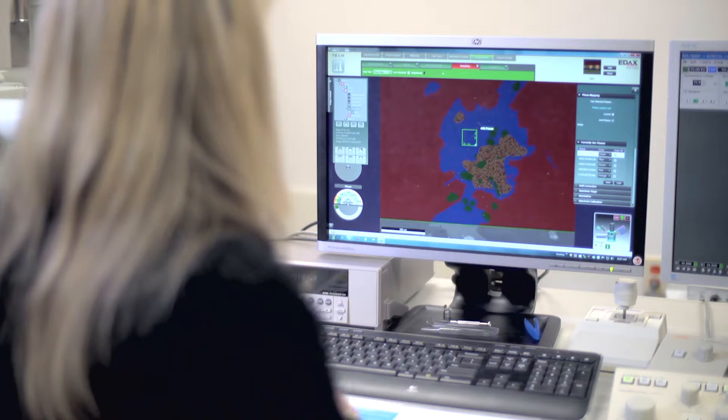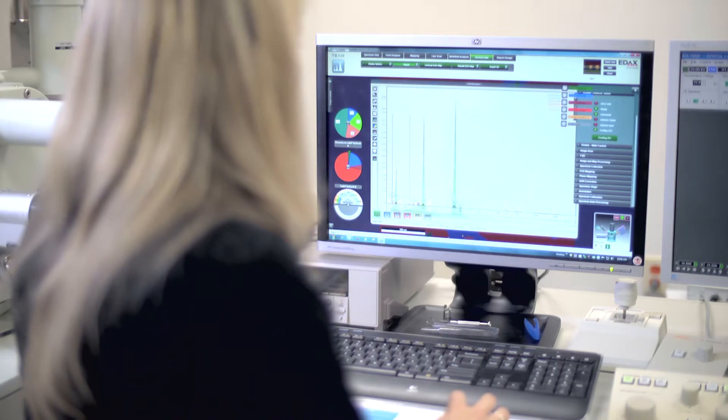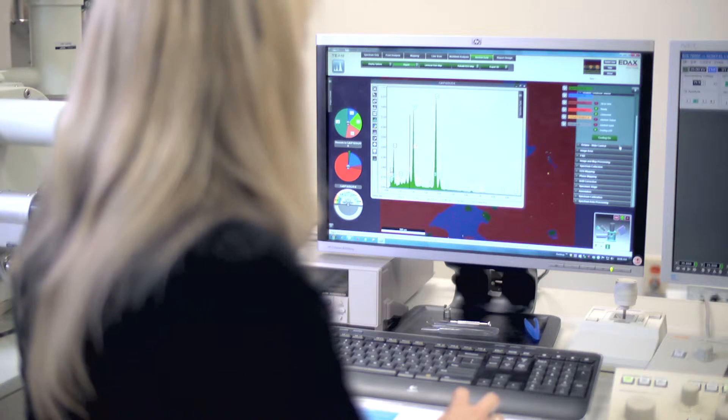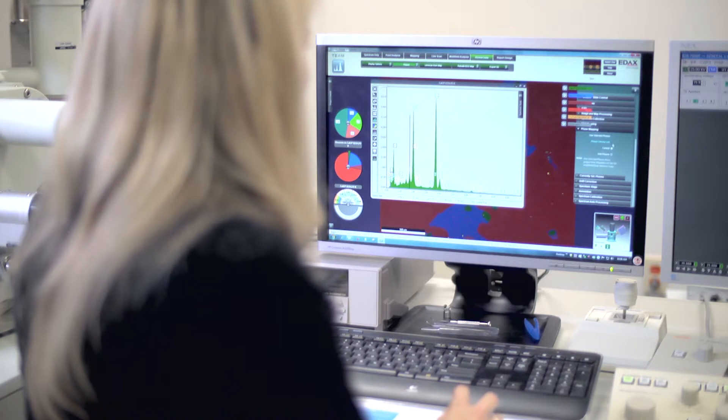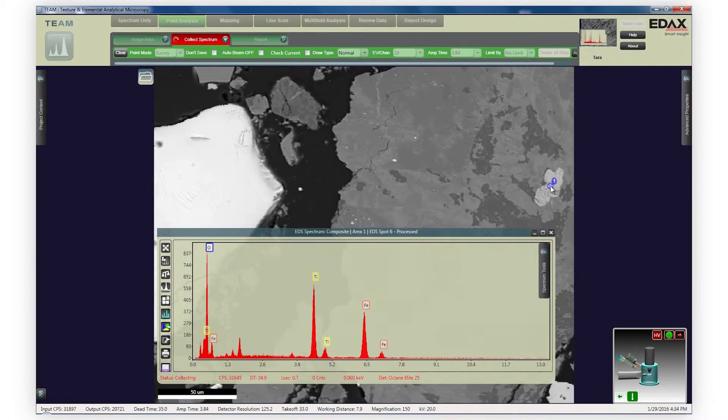Team EDS Point Analysis utilizes next-generation element identification and quantification algorithms for the fastest, most accurate collection of EDS spectra. Whenever a spectrum is gathered, ExpertID's element routine begins to automatically identify elements present in the spectrum.